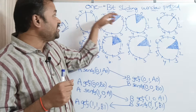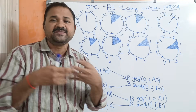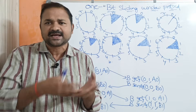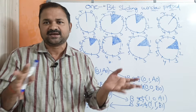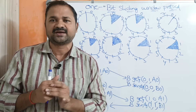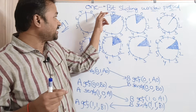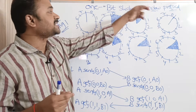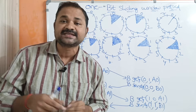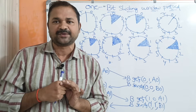However, if the window size is 2 bits, 3 bits, 4 bits, or 5 bits, then both protocols are different. So sliding window protocol and stop-and-wait are different when the window size is greater than 1 bit. But here, 1-bit sliding window protocol and stop-and-wait are the same.